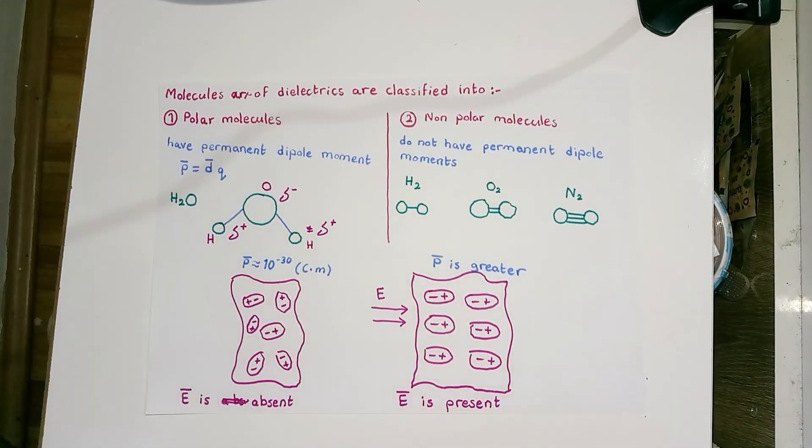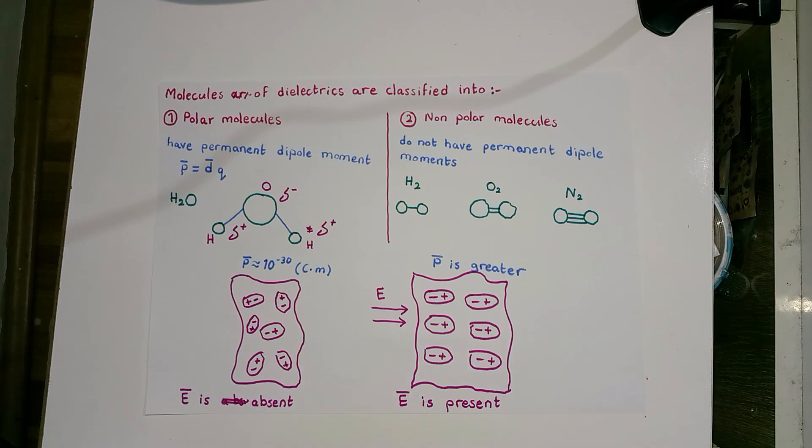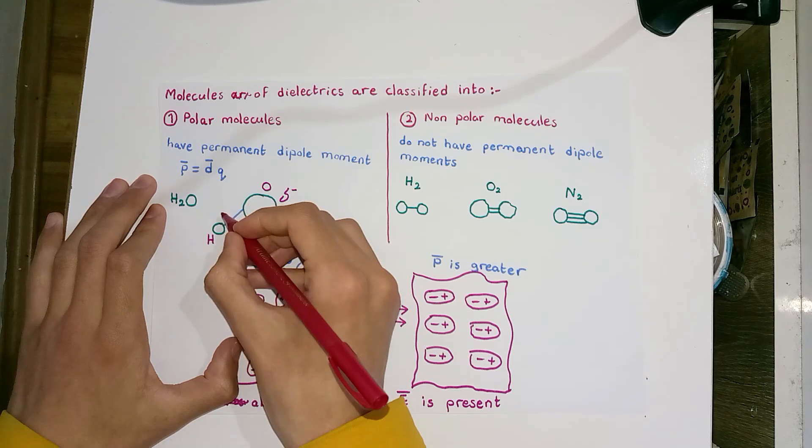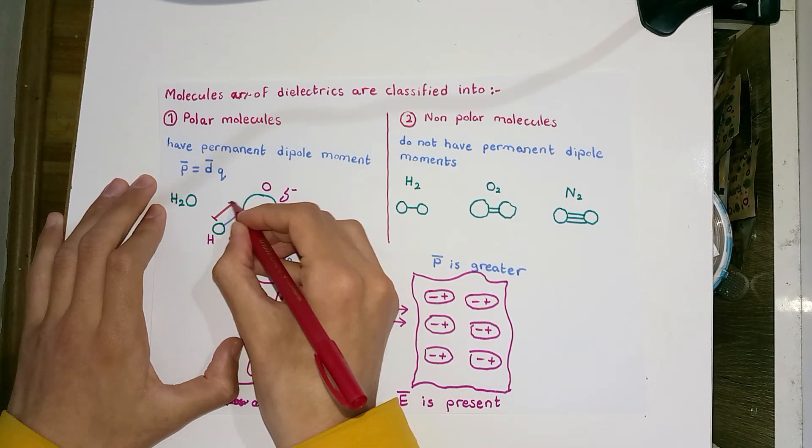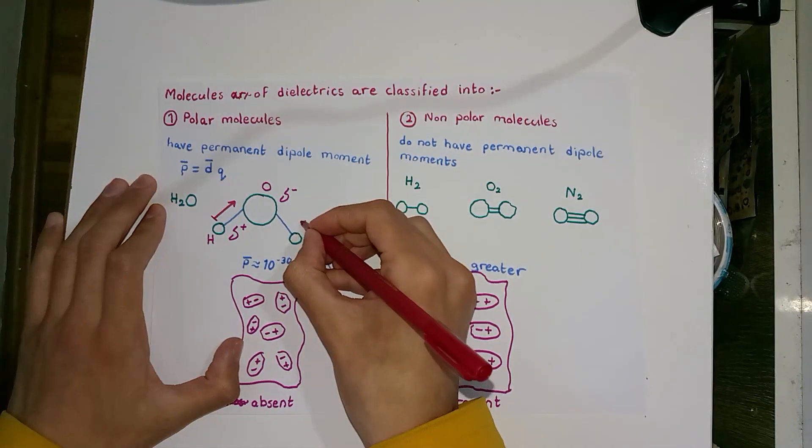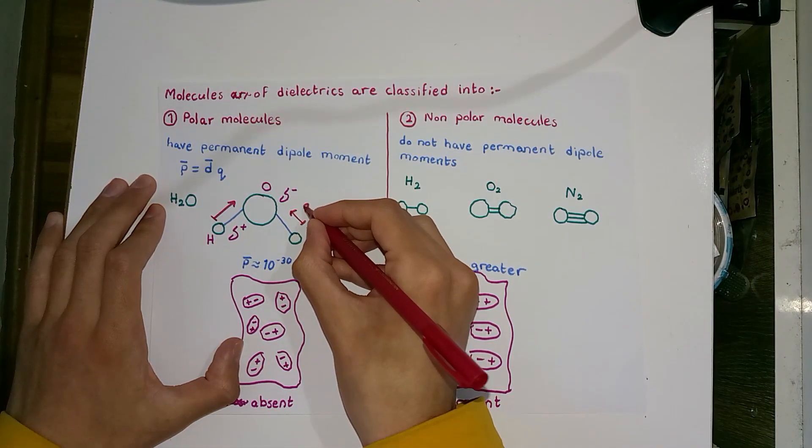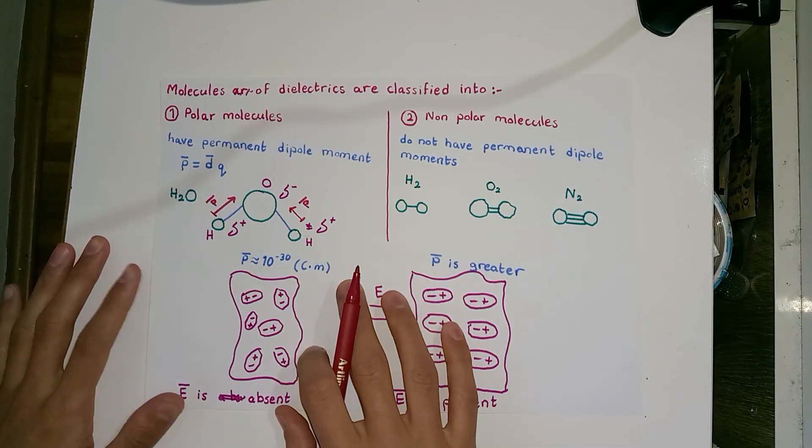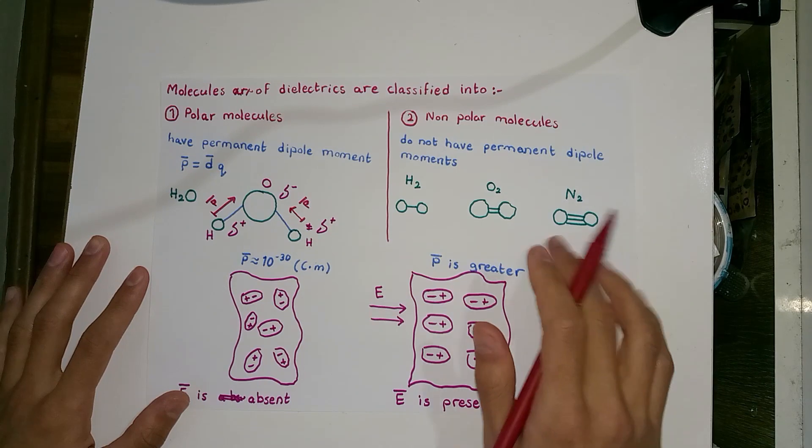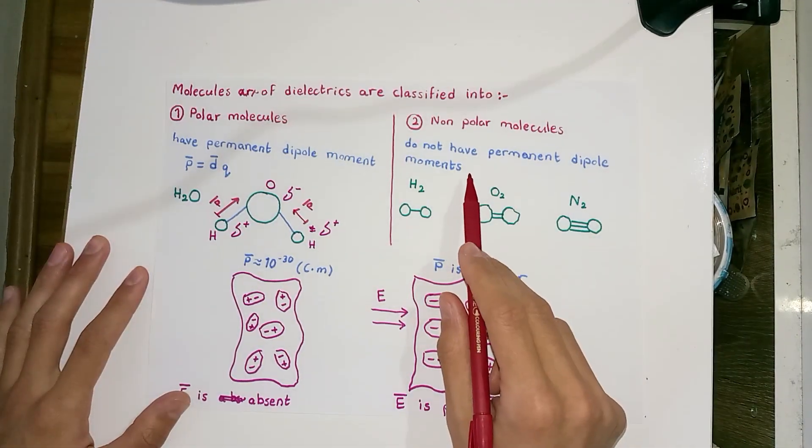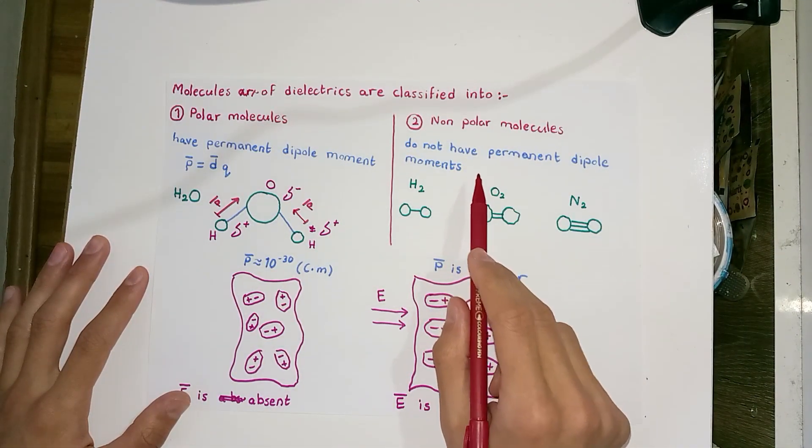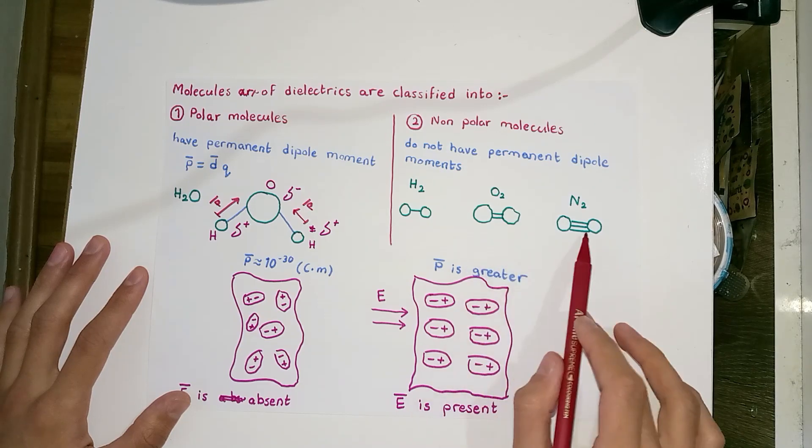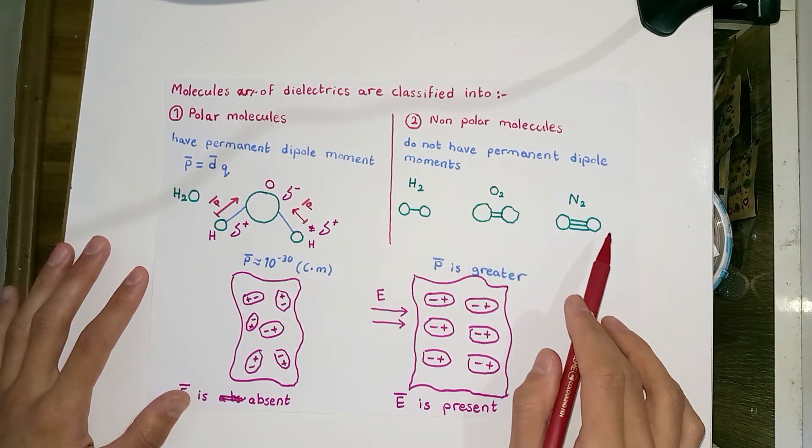The direction of the dipole vector starts from the positive charge to the negative charge. Unlike polar molecules, we have non-polar molecules which do not have permanent dipole moments. For instance, we have diatomic gases like hydrogen H2, oxygen O2, and nitrogen N2.